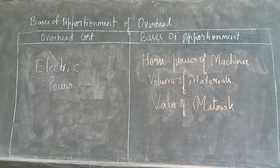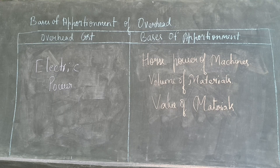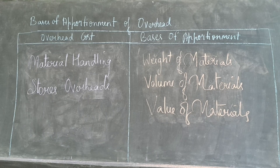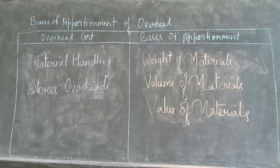Stores overhead — expenses incurred in stores — can be divided on the weight of materials, the volume or count of materials, or the value of materials. According to the situation, we should choose the appropriate basis of apportionment.